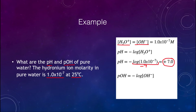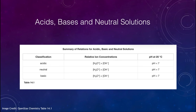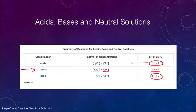We can do the same thing for pOH and find that it is exactly the same as the pH — that is the sign of a neutral solution. In summary: for a neutral solution, hydronium equals hydroxide and pH equals 7. Acidic solutions have a pH less than 7, with hydronium concentration greater than hydroxide. Basic solutions have a pH greater than 7, with hydroxide concentration greater than hydronium.